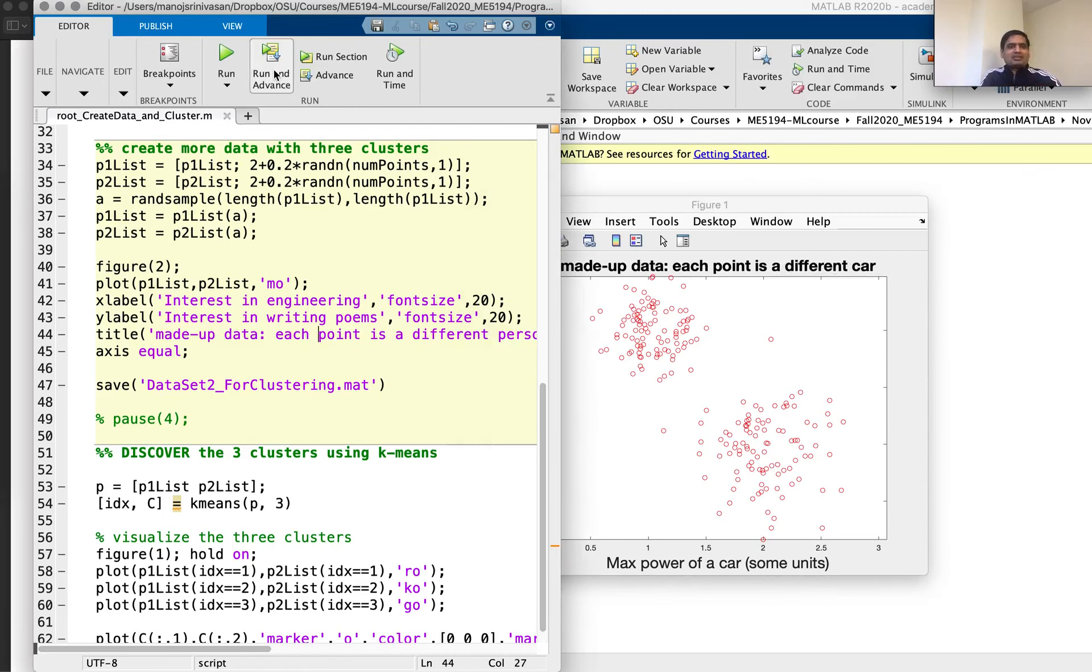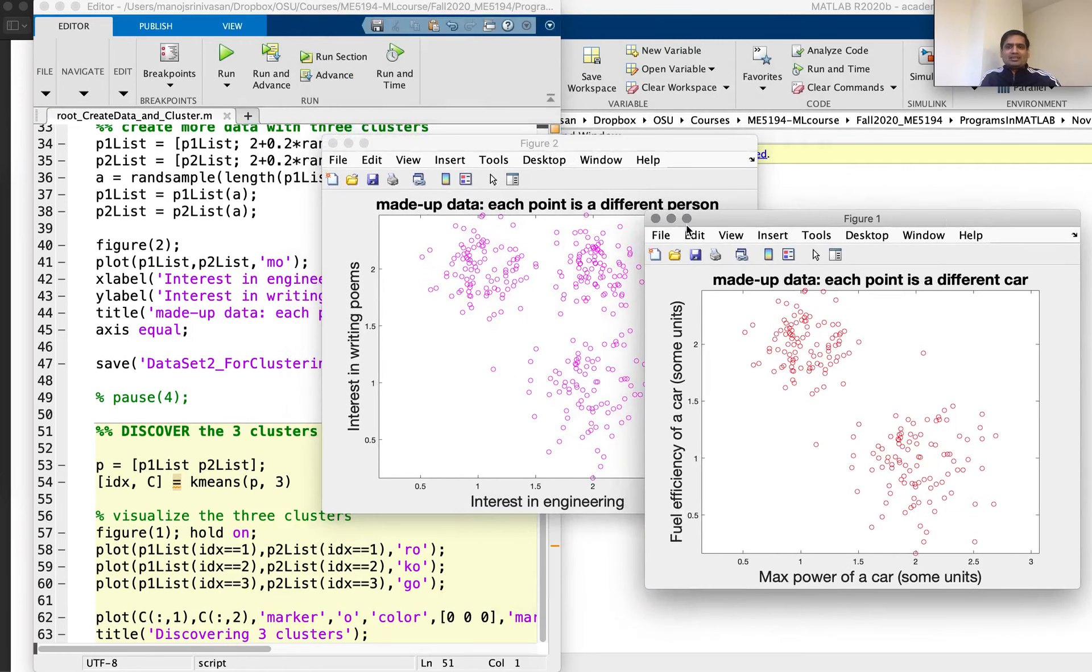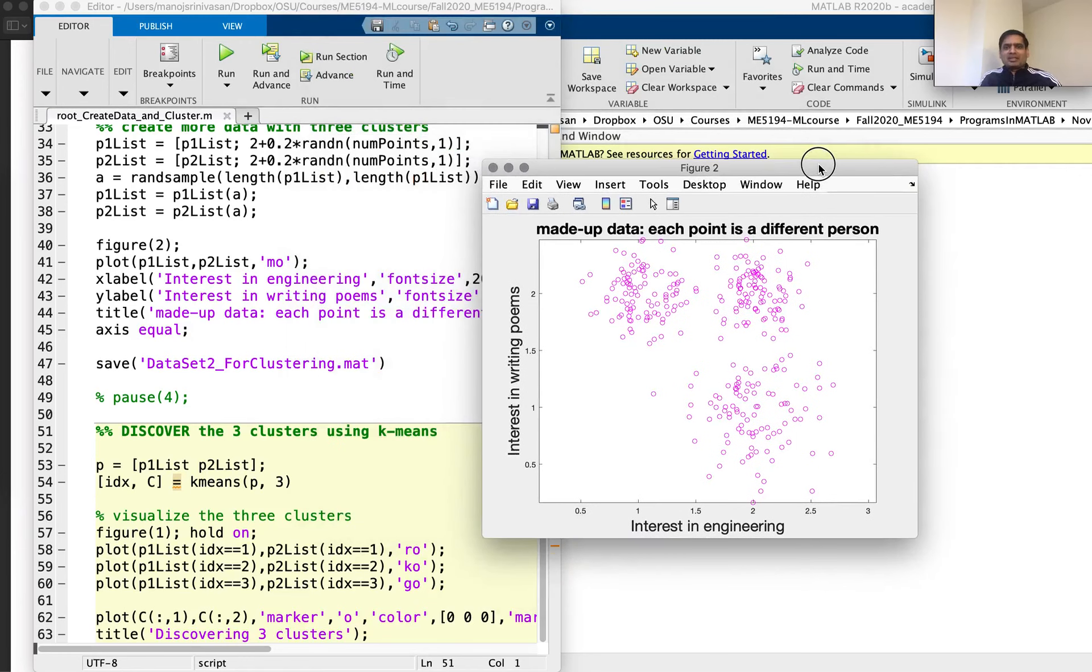And I made up another kind of data with three clusters. Again, this is completely made up. I just made up two dimensions for people. I don't know, interest in engineering, interest in writing poems. Maybe there are three clusters. Maybe people that are interested in poems, maybe there are people that are interested in engineering, and maybe there are people that are interested in both. Of course, these need not be clusters, but maybe there are clusters.